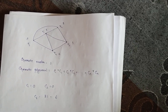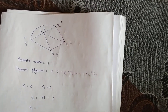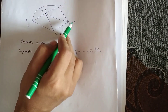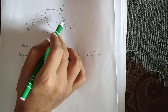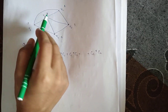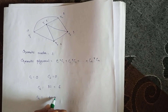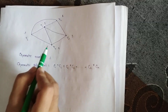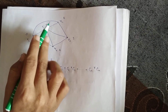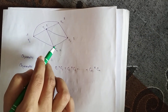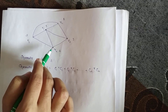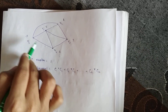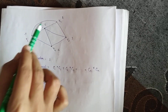For c4, the three vertices can be colored in 4 factorial ways using any of the four colors. The remaining vertices can each be assigned the fourth color in 2 ways, so c4 equals 4 factorial times 2, which is 48.